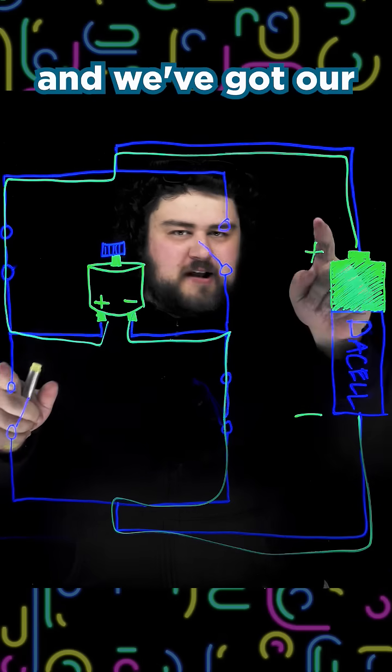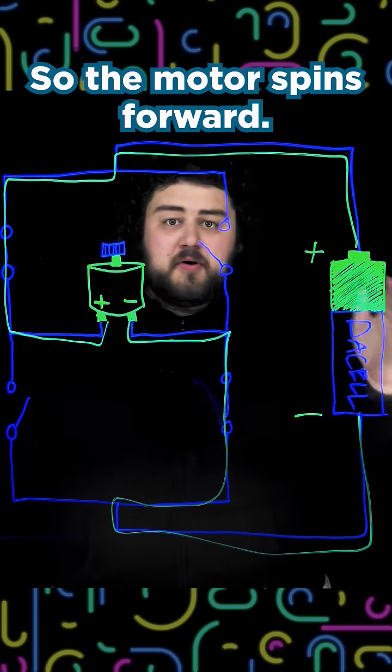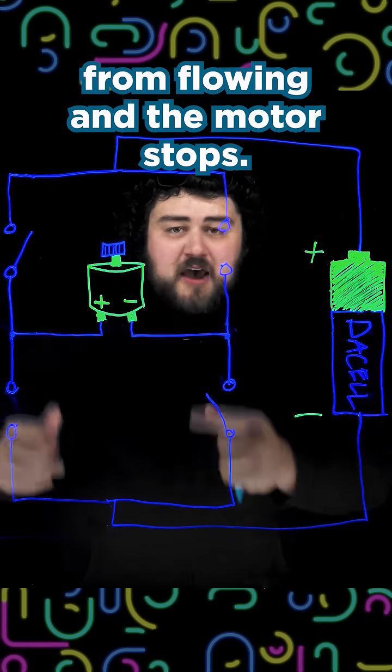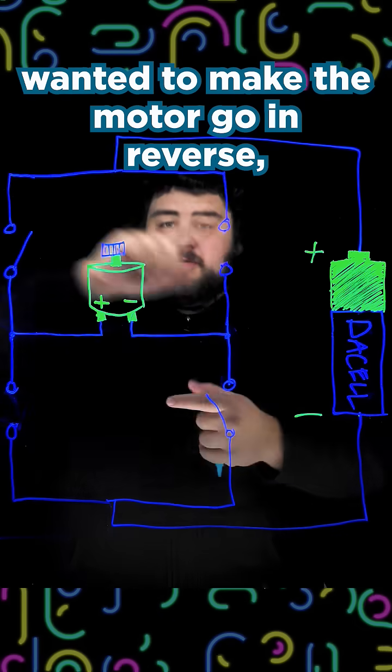This turns the motor on, and we've got our positive connected to positive, so the motor spins forward. Open those transistors again, and you stop electricity from flowing, and the motor stops. If the motor driver wanted to make the motor go in reverse,